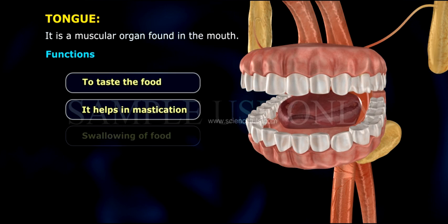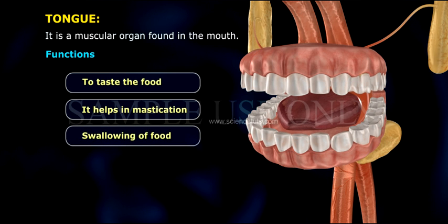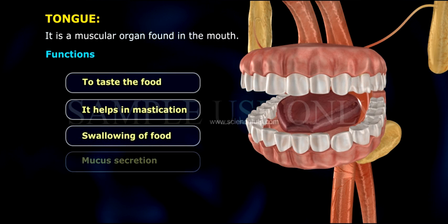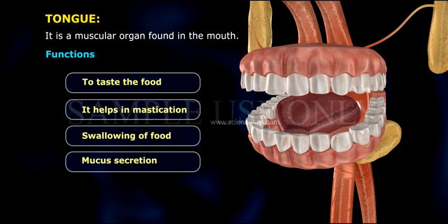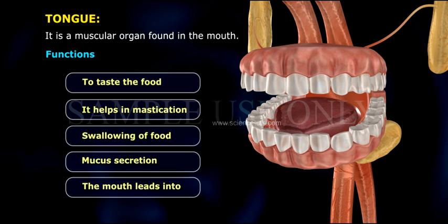The tongue is a muscular organ found in the mouth. Its functions include tasting the food, helping in mastication, swallowing of food, and mucus secretion.